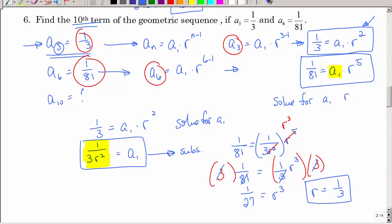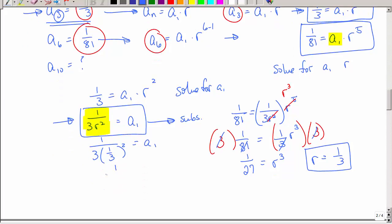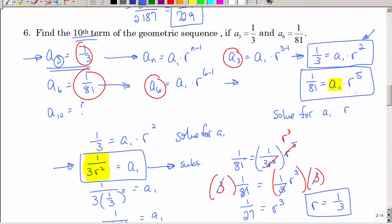Now, I know r. I can come back up here and say, ah, that's 1 third r squared. So, I have 1 over 3 times 1 ninth. So, that's 1 over 1 third. And so, a1 is 3. Hmm. So, I have a1. I have r. And what was the problem? It said to find the tenth term. So, how do I find the tenth term?